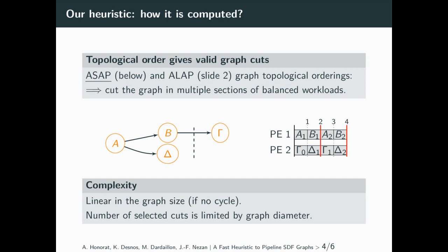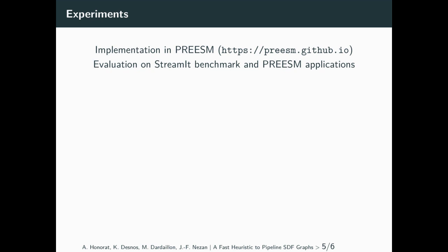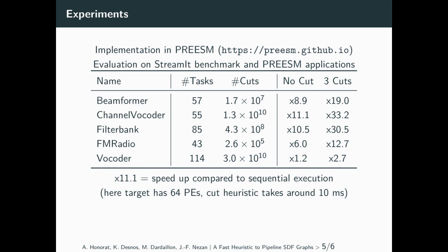We have implemented our heuristic in the Prism open source framework, and used the StreamIn benchmark along with a few of our own applications to evaluate it. A list scheduler measures the speedup. Here is a small excerpt of our results for applications having numerous possible graph cuts — it is clearly not possible to test and schedule each of them in a reasonable time. The last two columns on the right give the speedup without any cut, and then with three cuts selected by our heuristic. For the channel vocoder and filter bank applications, the speedup increases by a factor of 3.